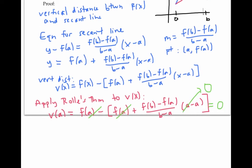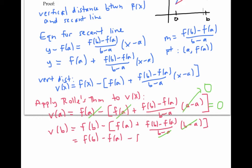If I calculate v(b), again, just plugging in b for x, I get f(b) minus this quantity. Now my (b - a)'s cancel. So now I'm getting f(b) - f(a) - f(b) + f(a), which again is just zero.